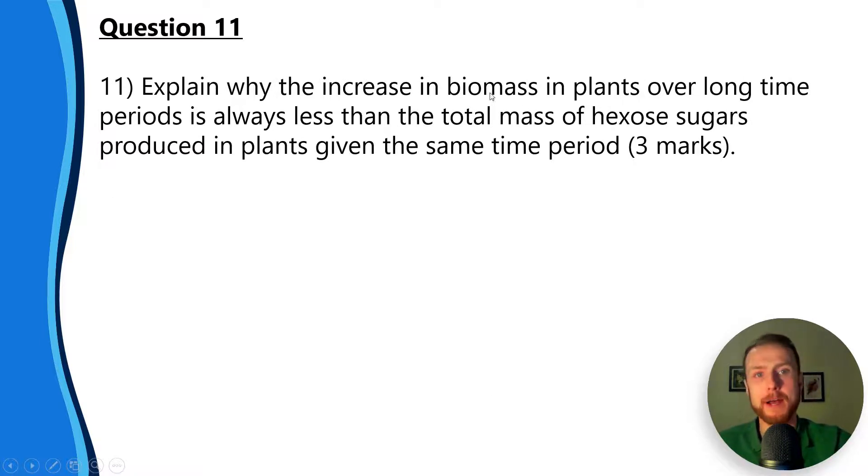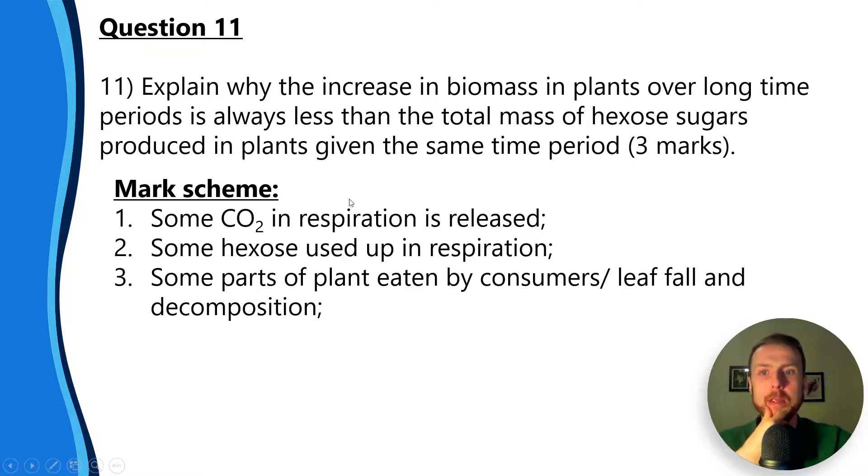Number 11: explain why the increase in biomass in plants over a long time is always less than the total mass of hexose sugars produced in plants given the same time period. First of all, you need knowledge of what biomass is - it is the dry organic mass of a stage of the food chain.